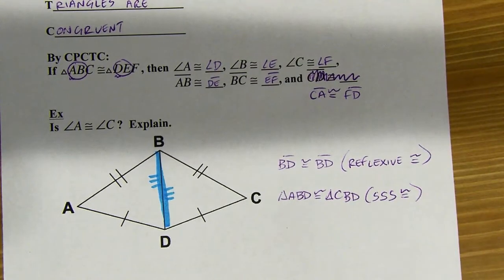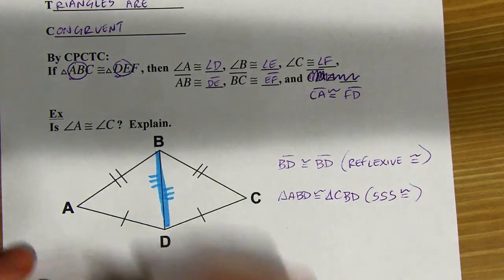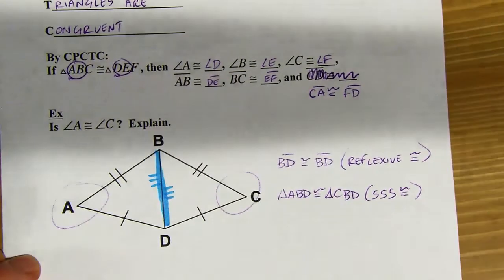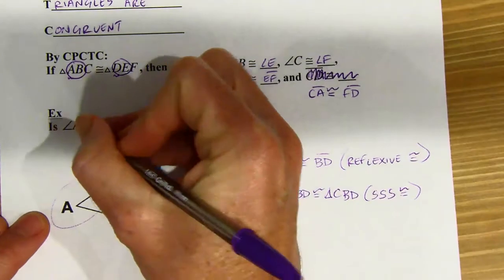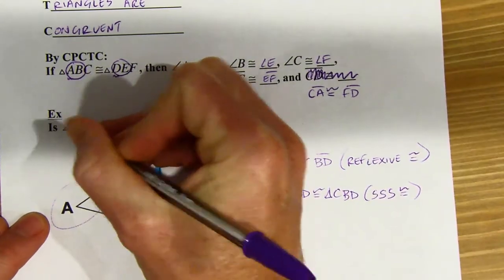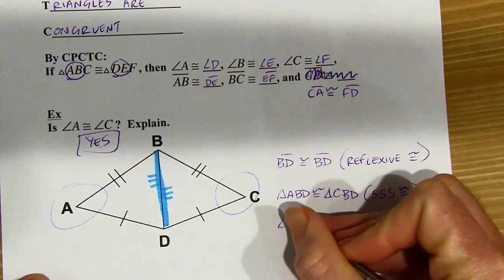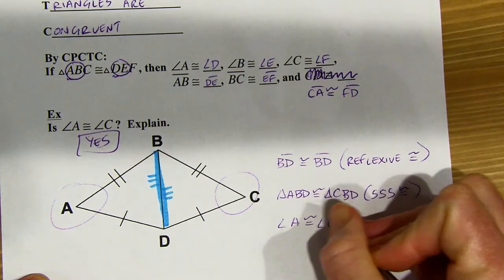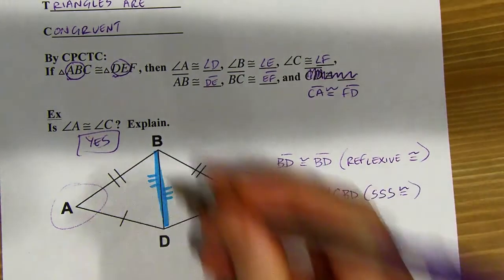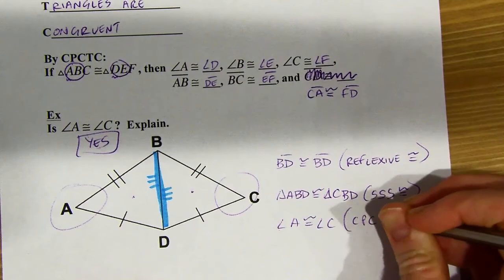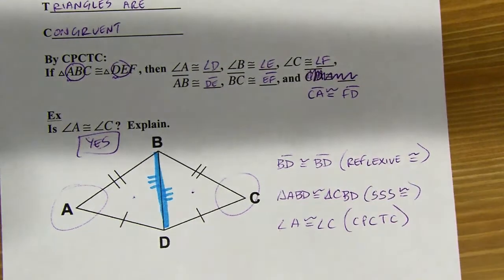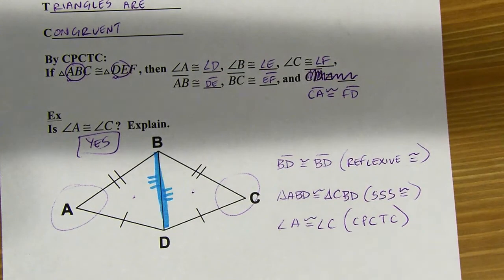Now that I've got the triangles congruent, all of the matching parts would be congruent, including these two angles. Now I can say those two angles are congruent to each other. My answer is yes — angle A is going to be congruent to angle C, because I've already shown that these two triangles are congruent and they're corresponding parts of those congruent triangles. That's CPCTC in action.